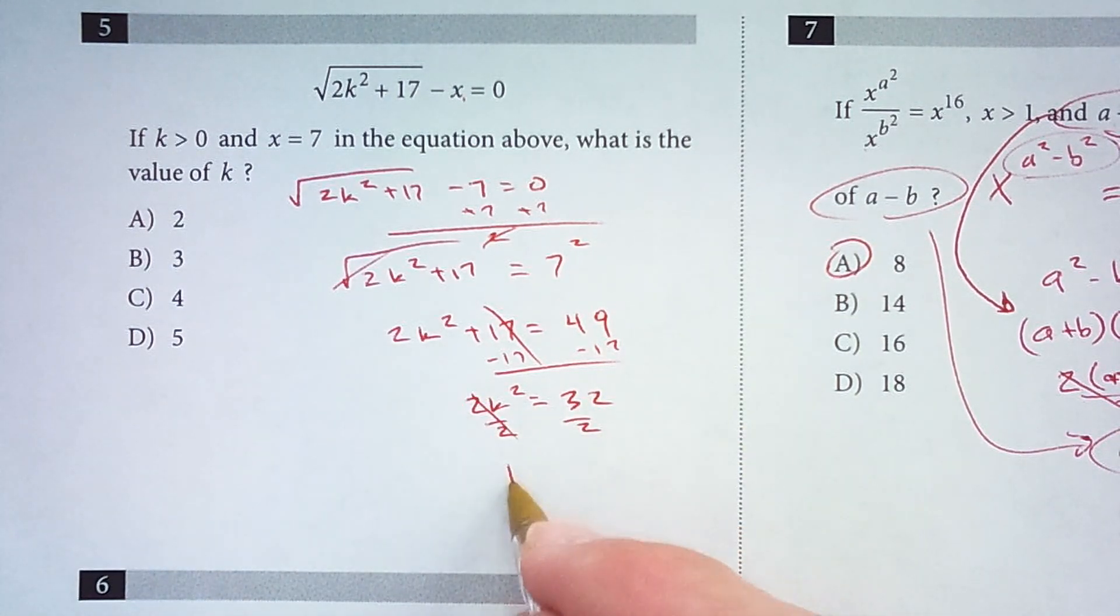Divide by 2 and I get k squared is 16, and then take the square root.